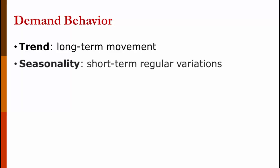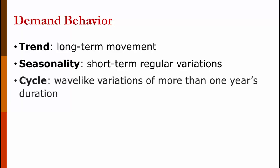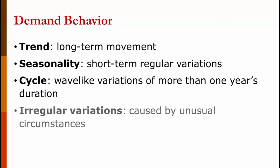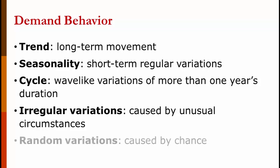Seasonality is short-term, regular variations. We'll talk more about this later, but basically you sell more lawnmowers in the summer and less lawnmowers in the winter. Cycles are wave-like variations of more than one year's duration, typically four to six years in duration. We'll talk about these later as well. Irregular variations are caused by unusual circumstances, for example, the Olympics coming to town. Random variations are variations caused by chance.